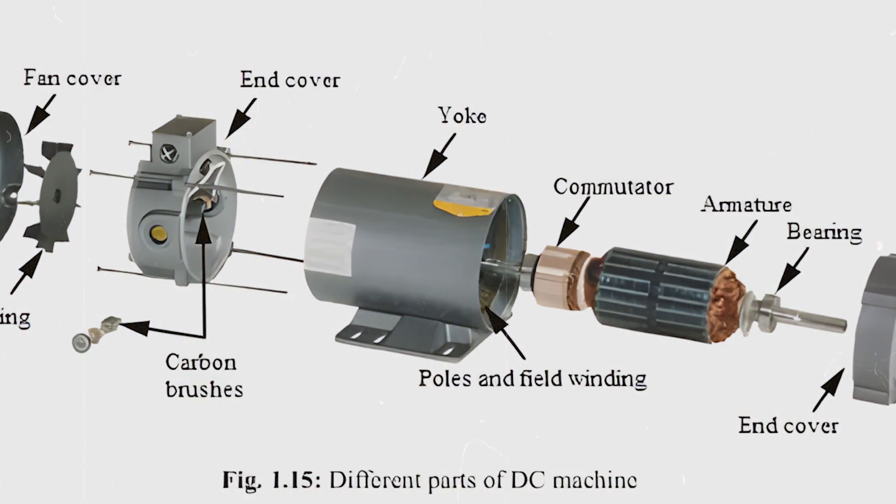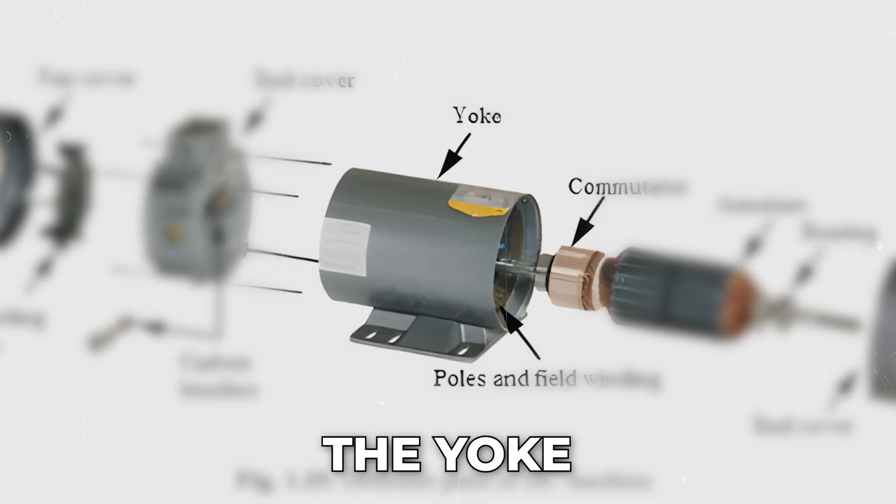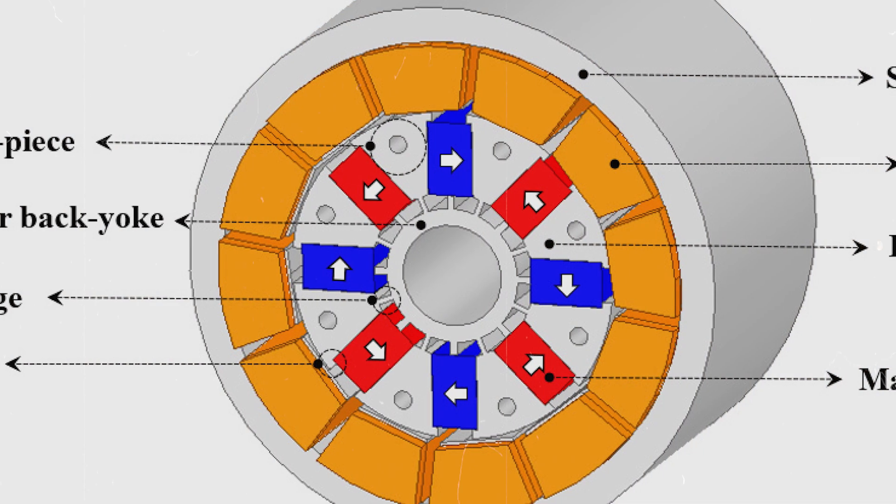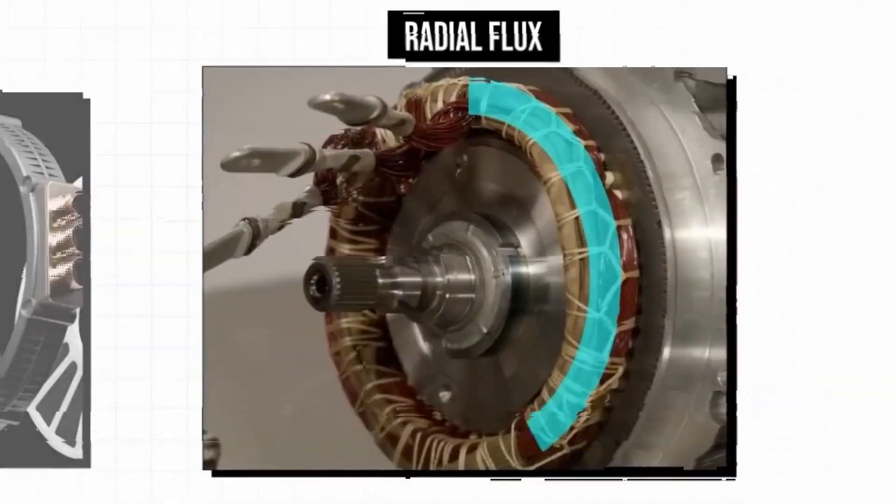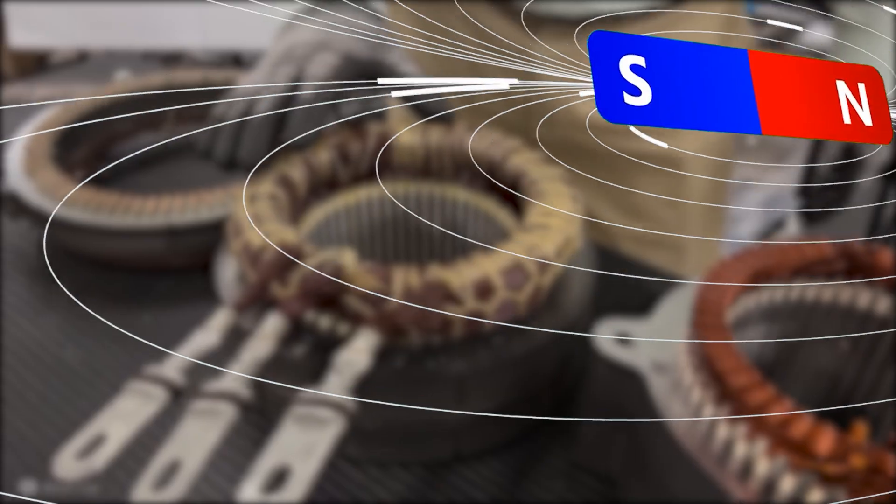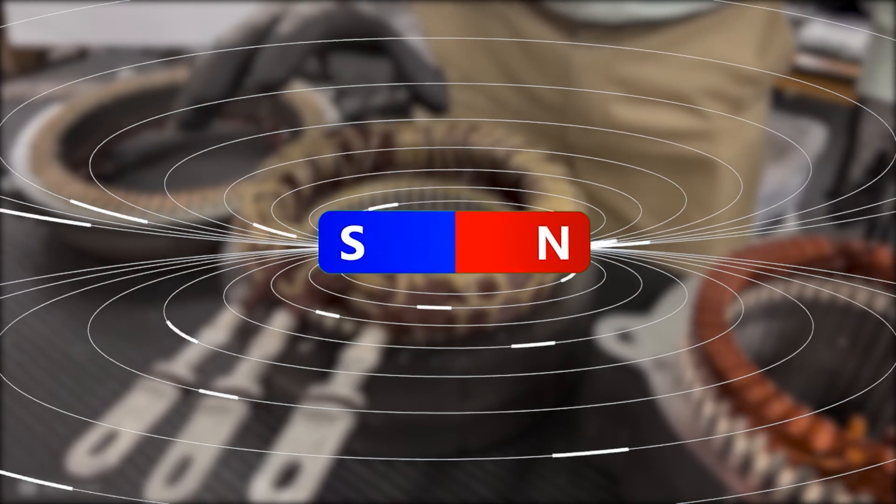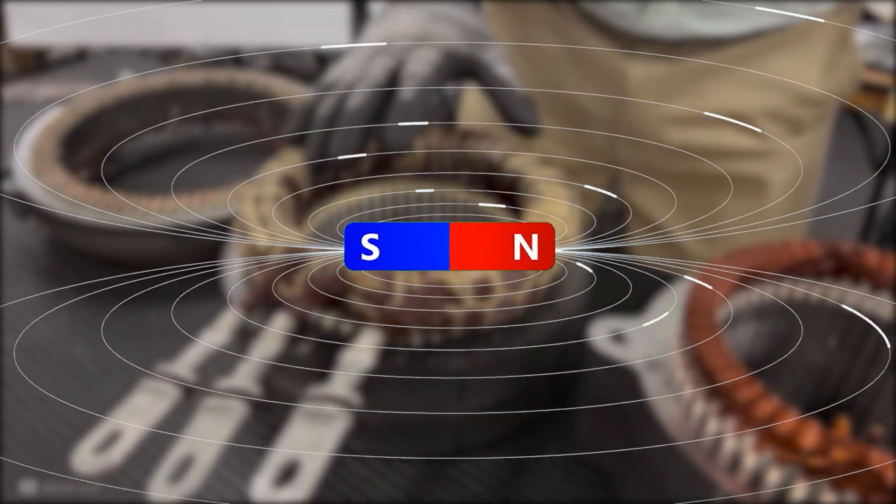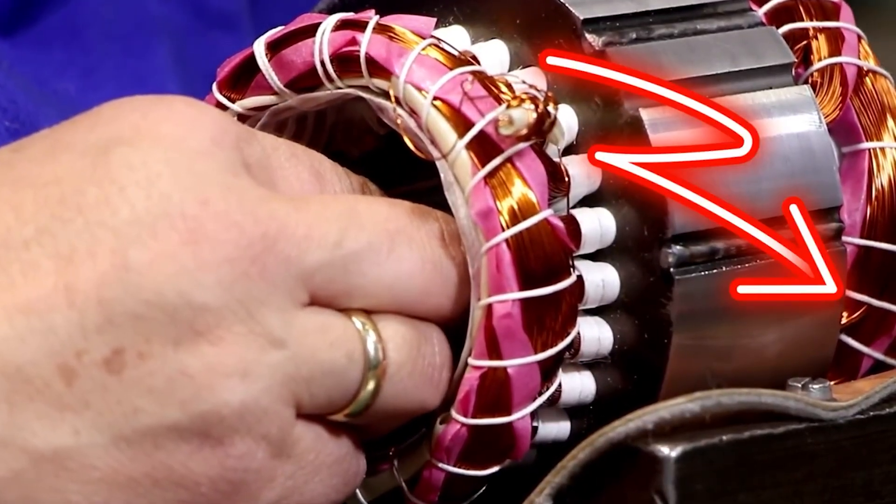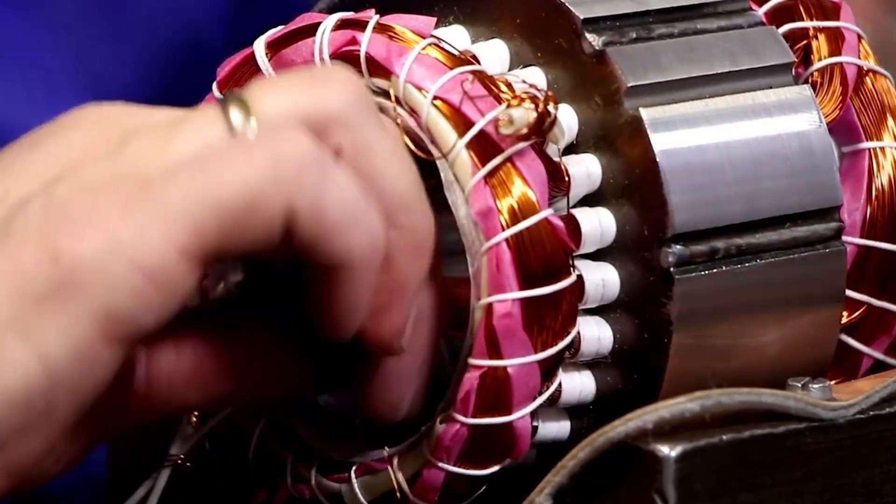But it also includes a key component called the yoke, a heavy steel ring that sits around the stator. The yoke has three important roles. It provides structural strength so the stator does not twist or move. It guides the magnetic loops that run from the north to the south poles. And it acts as a path for heat to move away from the copper windings into the cooled outer parts of the motor.